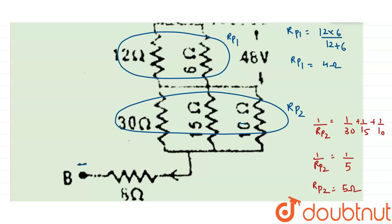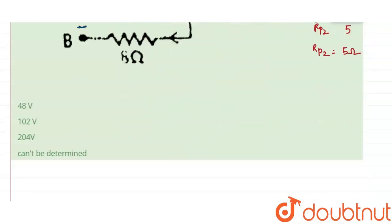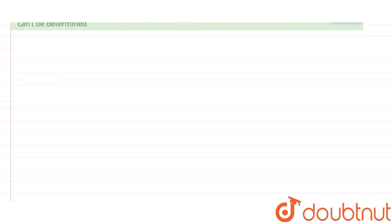Now we have 4 ohm and 5 ohm. You must remember two things: in parallel, the voltage remains constant; and in series, the current remains the same.